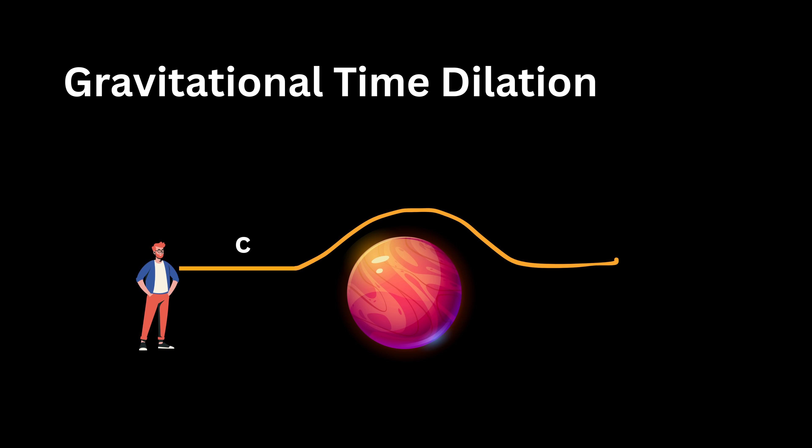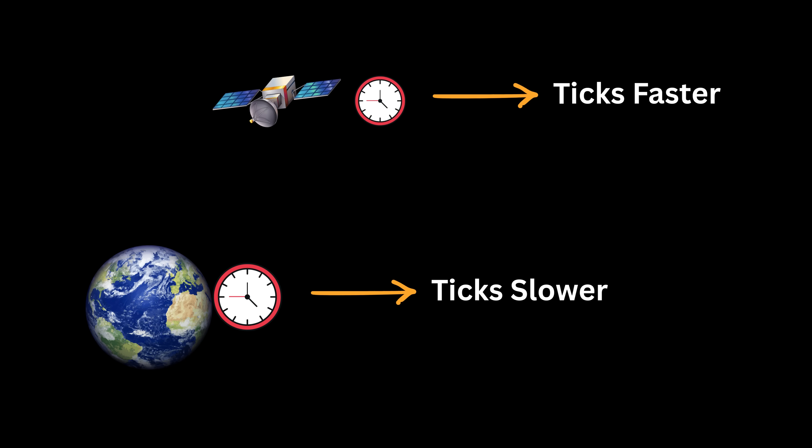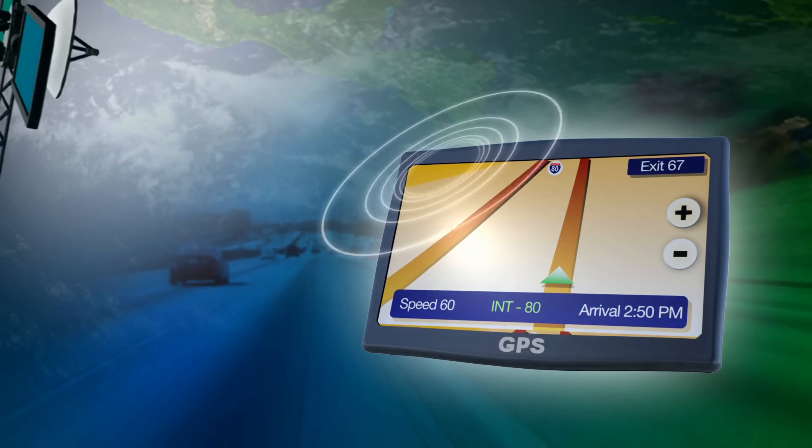This isn't just theory. We've measured this. For example, clocks on the surface of the Earth tick slightly slower than clocks on satellites orbiting far above. These satellites experience weaker gravity, so their clocks move just a bit faster. This difference is tiny, but it's real.